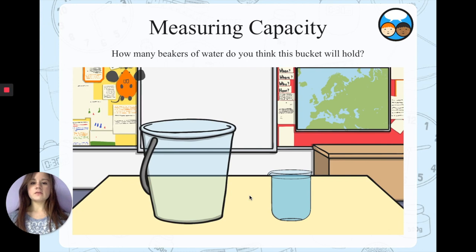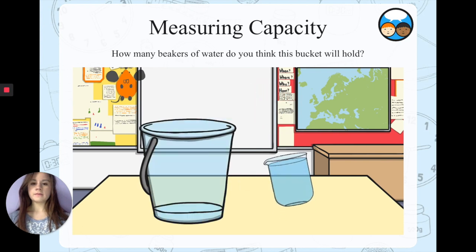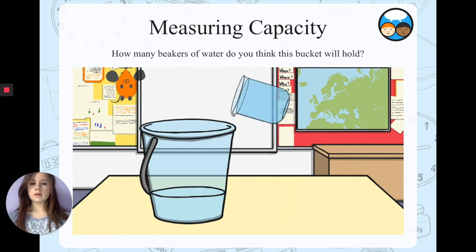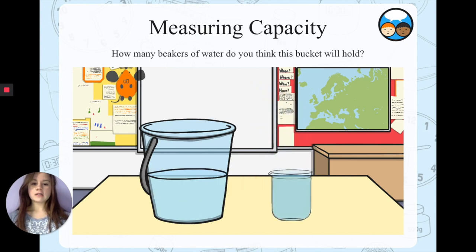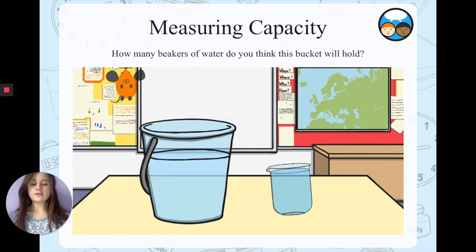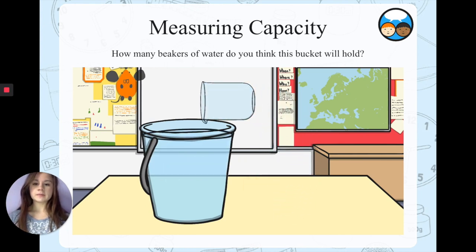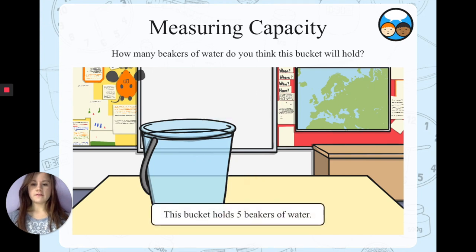How many beakers of water do you think this bucket will hold? Tell your adult to have a guess. Okay let's see if you were right. One. Two. Three. We can add some more. Four. It's nearly full. And five. This bucket holds five beakers of water.